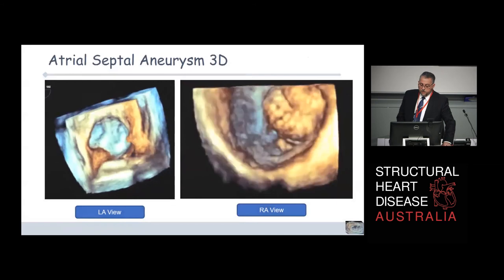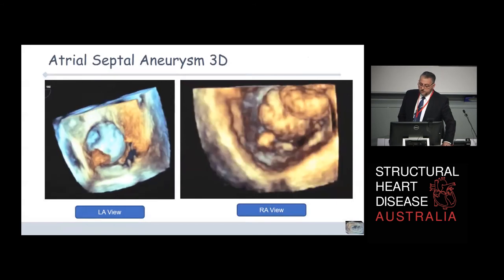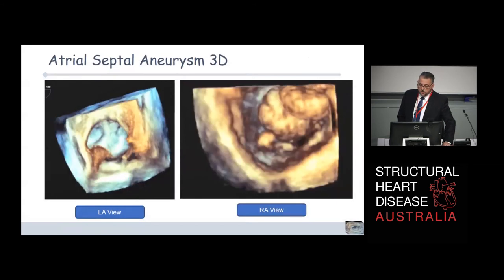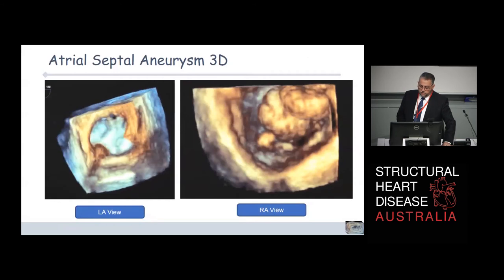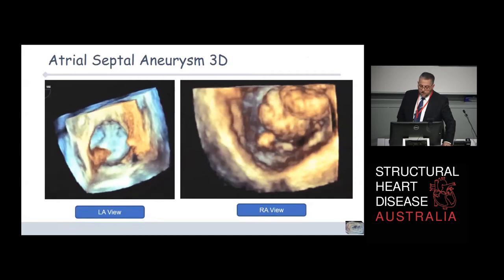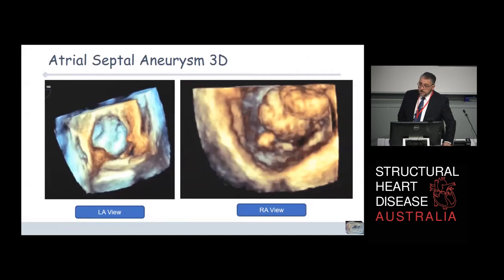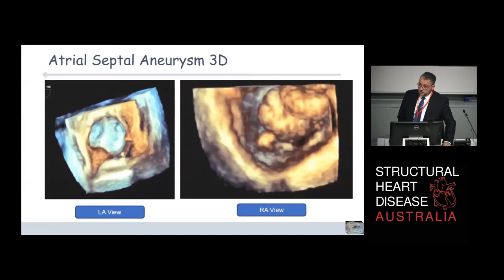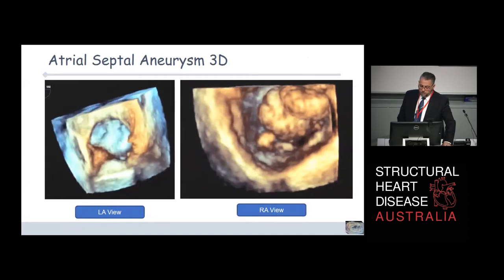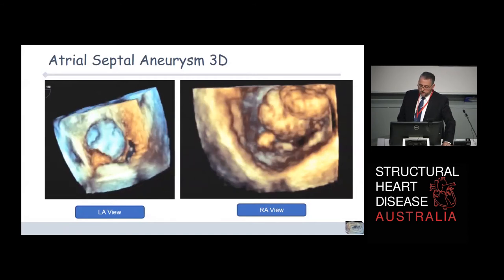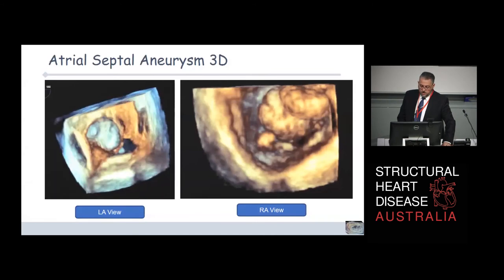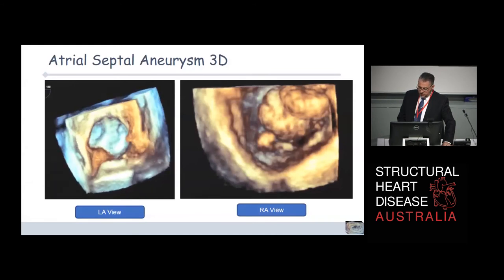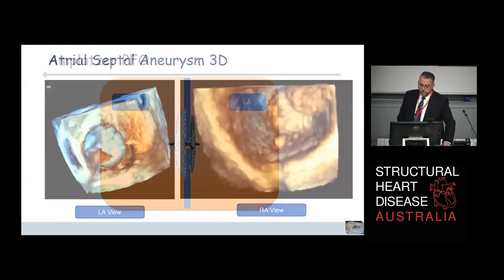A brief side note about atrial septal aneurysm: these are huge, bulging redundancies of the atrial septum, which sometimes are and sometimes are not associated with shunting and PFO. In 3D they look almost the size of a cherry or a plum - that's how big the distortion can be.